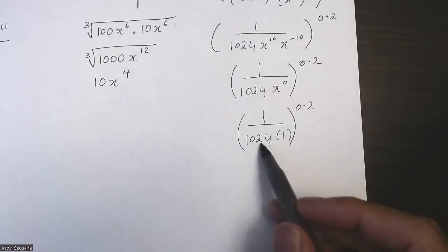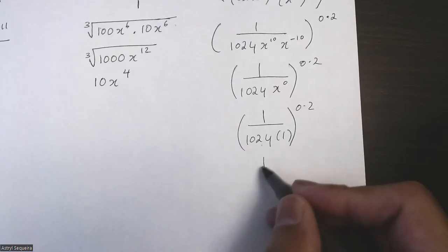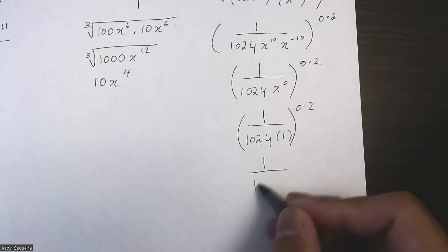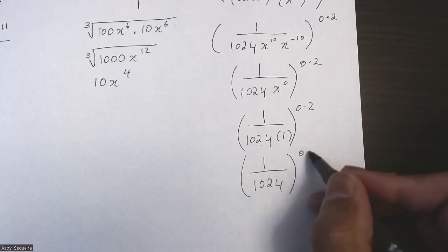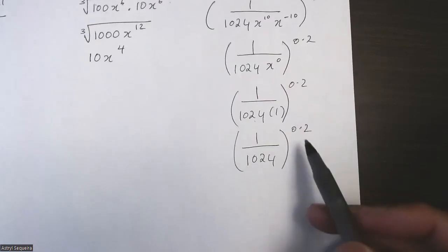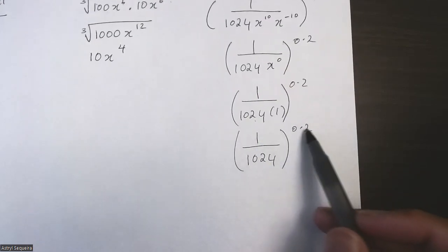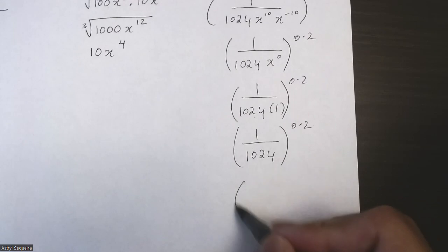And 1024 times 1 is just 1024. And then we just have to do 1 over 1024 to the power of 0.2. Remember, this is just like 1 over—0.2 is just 1 over 5—which is basically the fifth root of this.